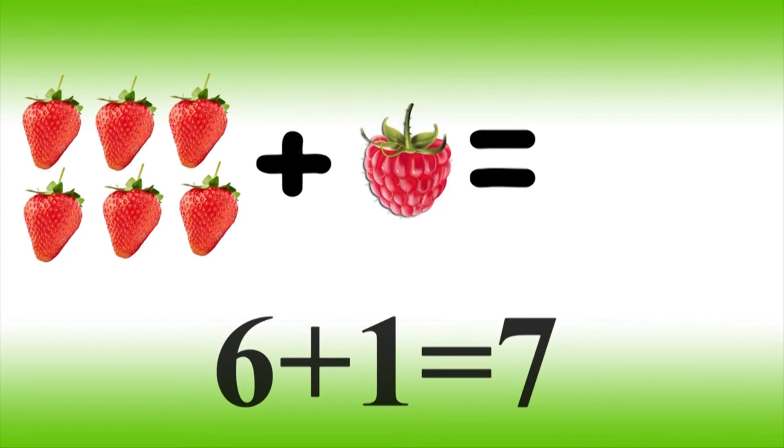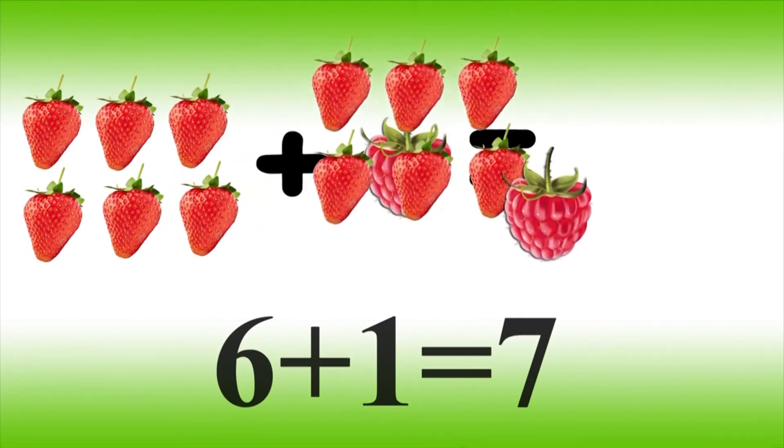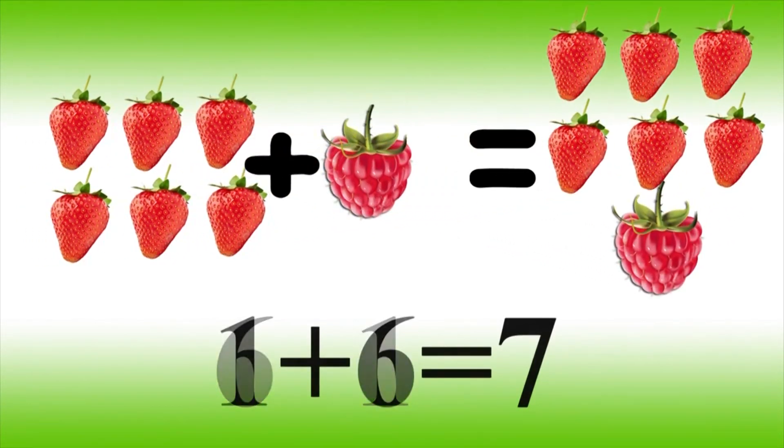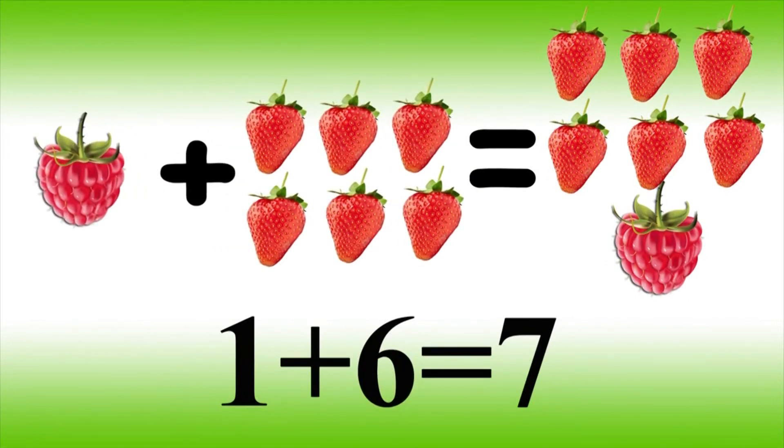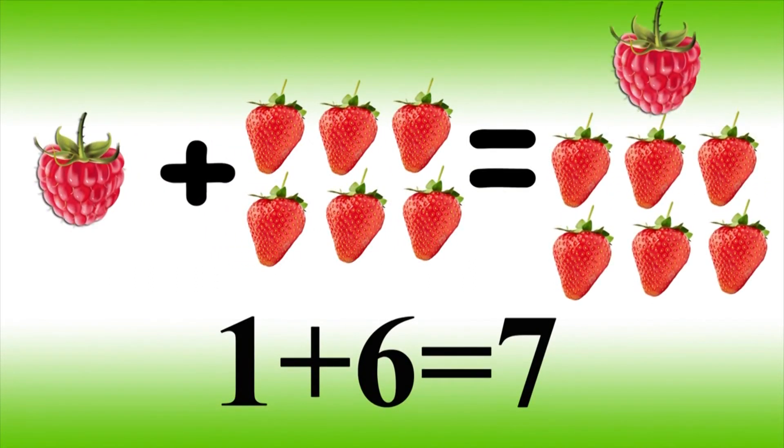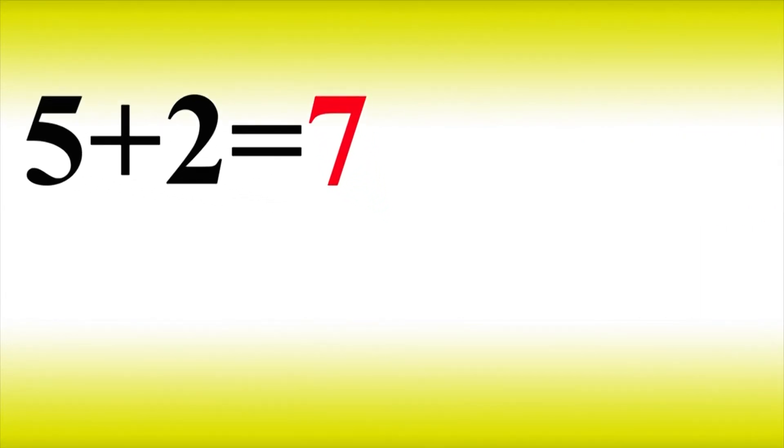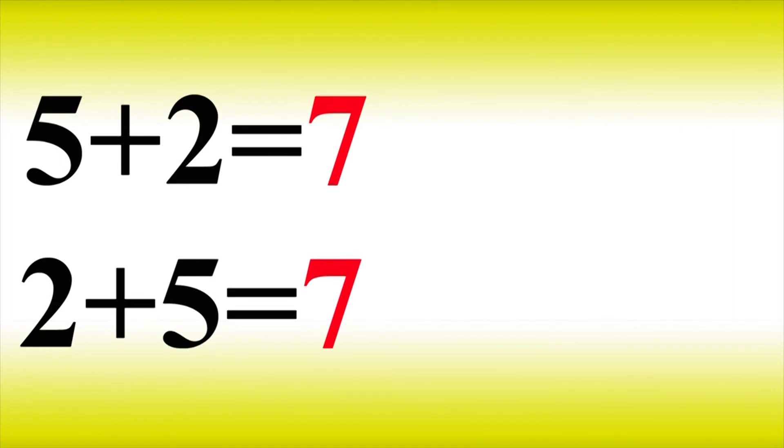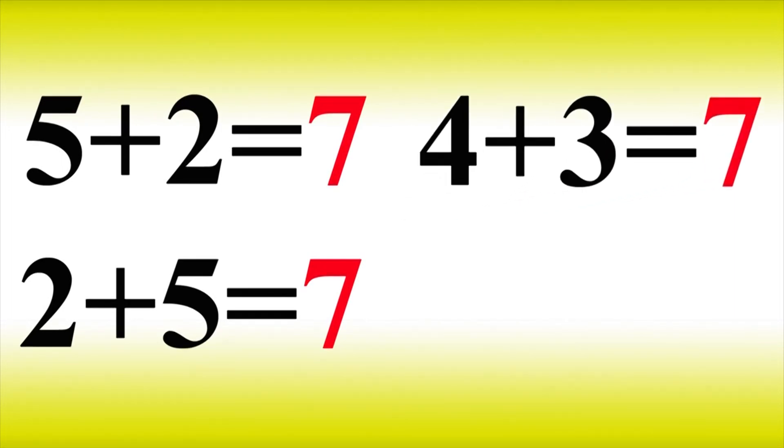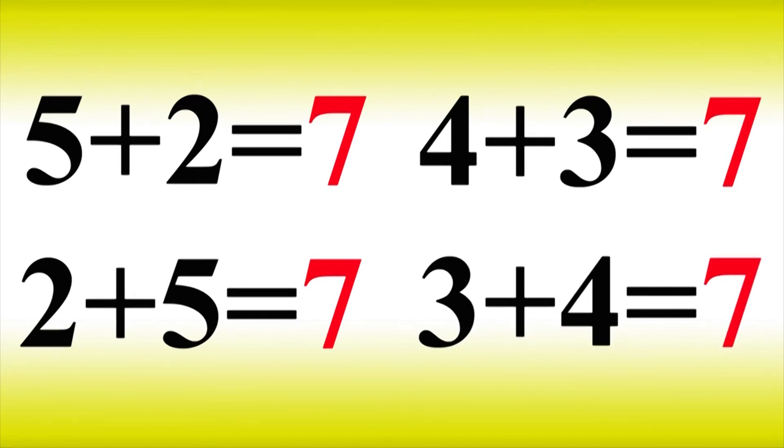If you add one to six, you get seven. And vice versa, one plus six equals seven. And five plus two is seven. Two plus five makes seven. Four plus three is seven, and three plus four equals seven.